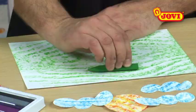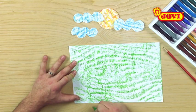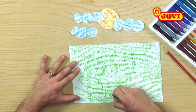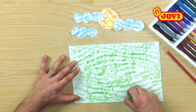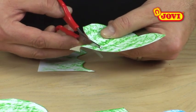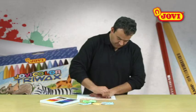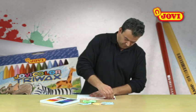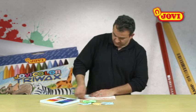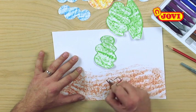Meanwhile, we colour in a whole sheet using green wax crayon, then draw a number of tree tops and cut them out. To make the tree trunks, we repeat the same process, this time using brown.